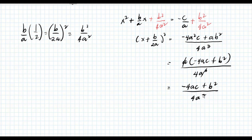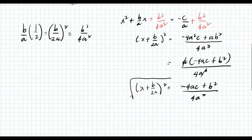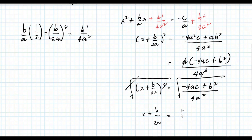After that, we can extract the square root of both sides of the equation. Taking the square root of both sides gives us x plus b over 2a equals plus or minus the square root of negative 4ac plus b squared, all over the square root of 4a squared, which is 2a.